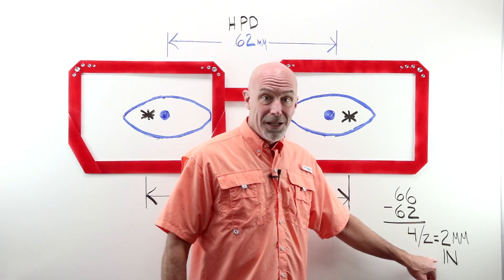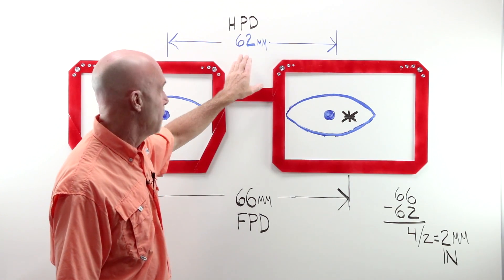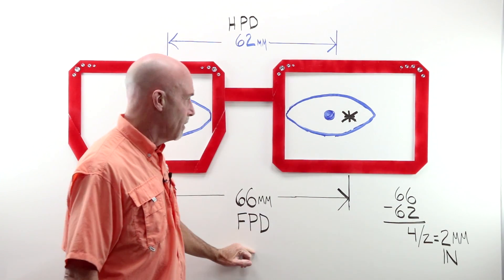Why two millimeters in? Because my PD is more narrow, less than my frame PD.